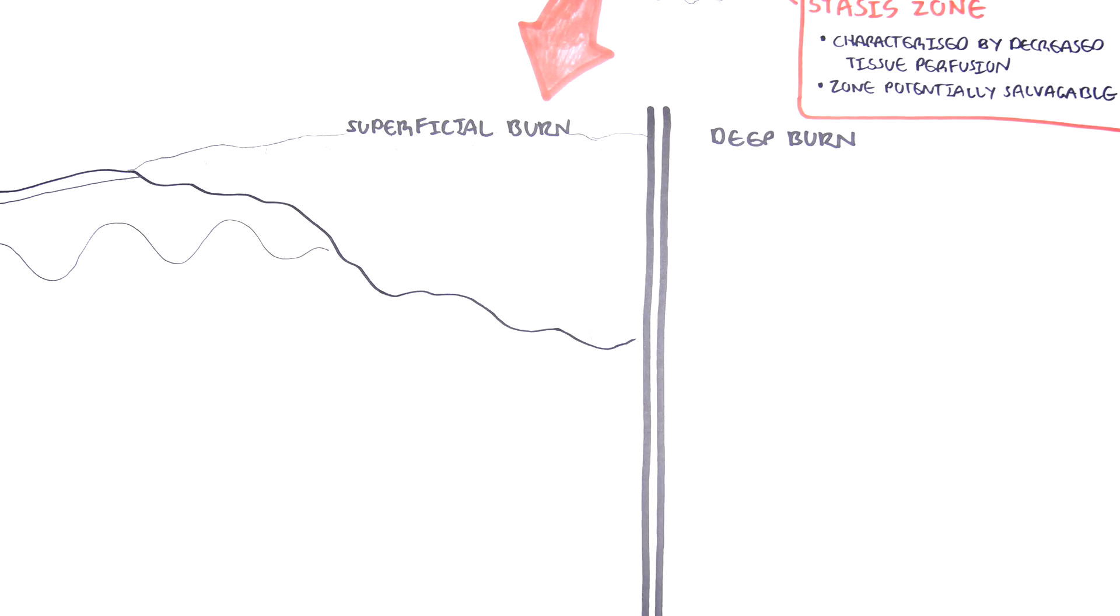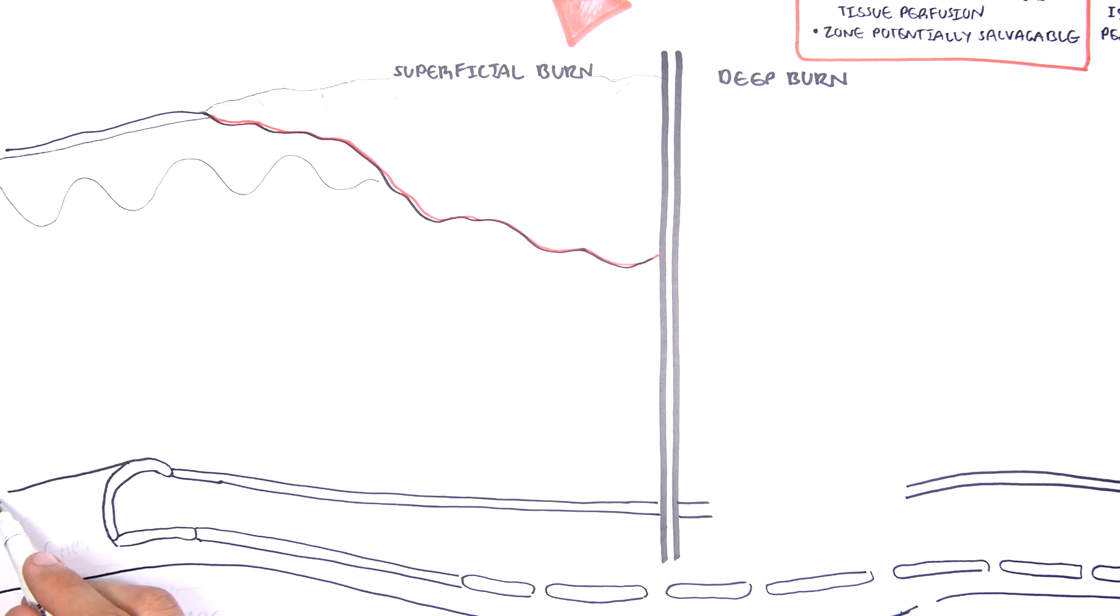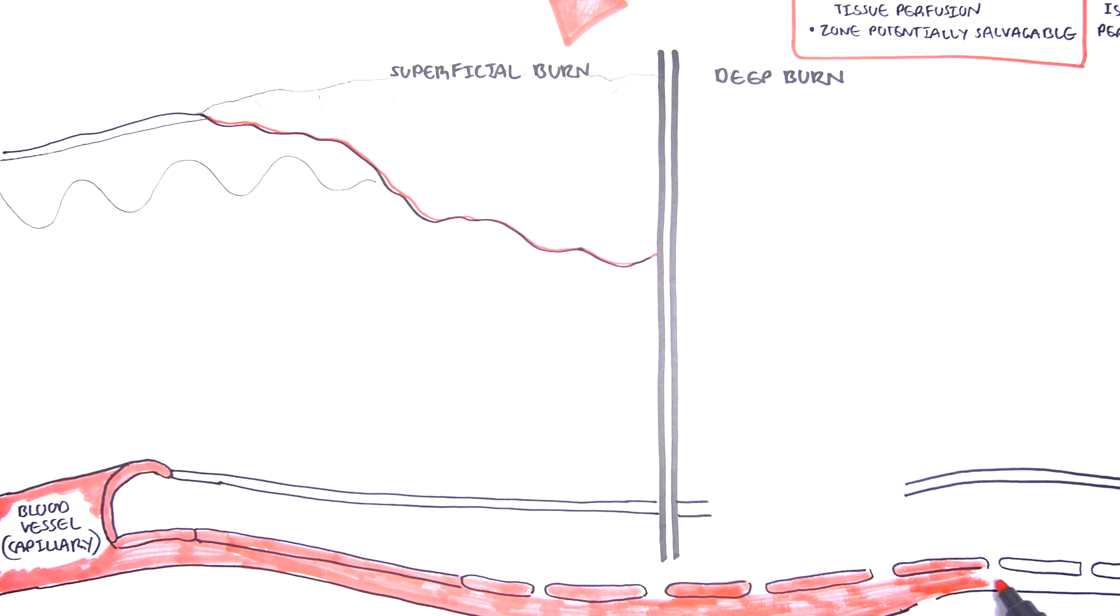Let's take a look at a superficial burn first. If it's a superficial burn, it will cause damage to the epidermis and the upper dermis only, so like the capillary layer of the dermis. Again, you have blood vessels here, capillaries.